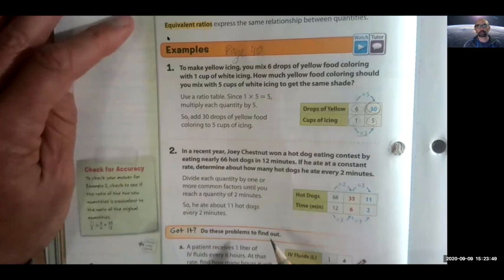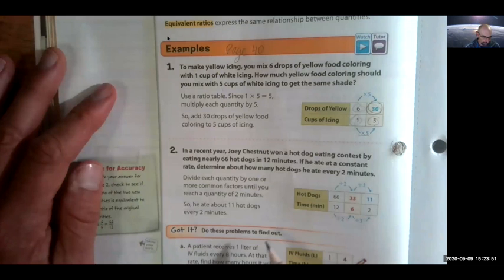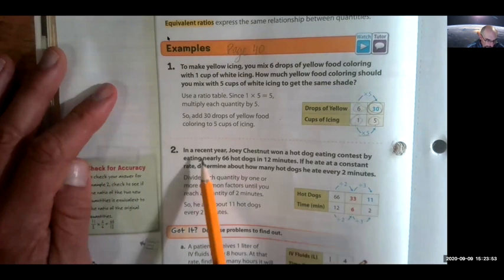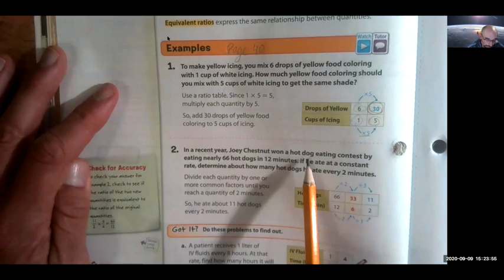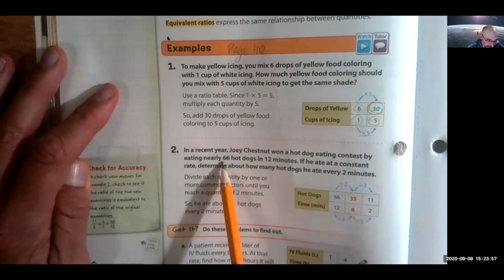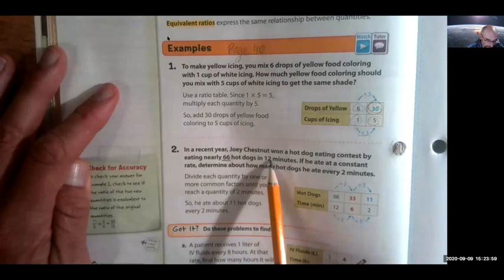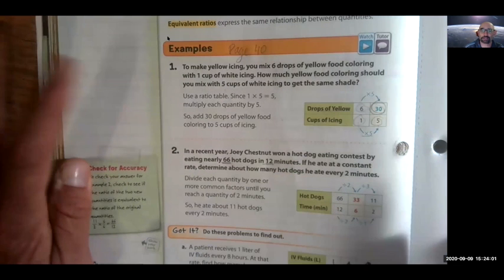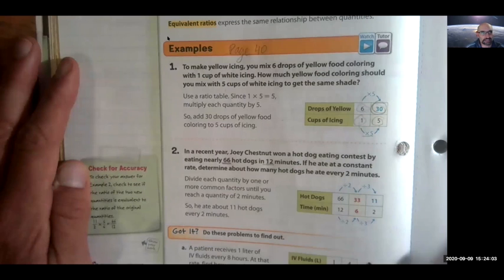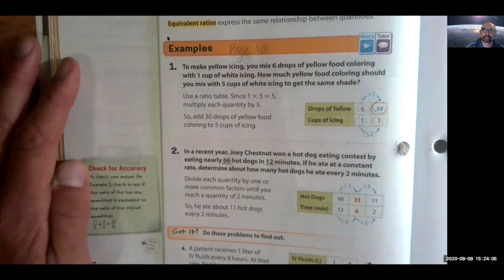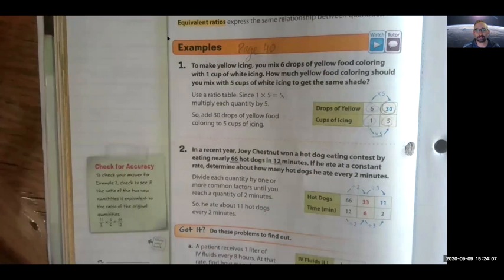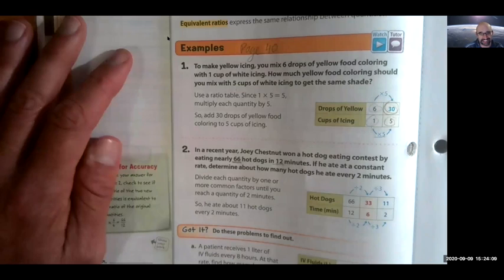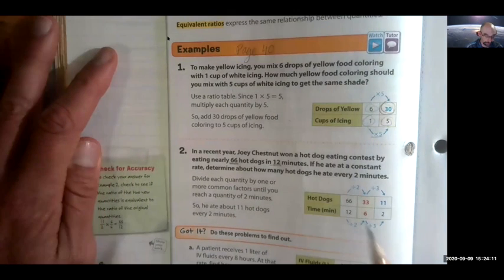And this one is sort of like one of the ones that we did as an example as well. In recent year, Joey Chestnut won a hot dog eating contest by eating nearly 66 hot dogs in 12 minutes. Okay. So let's just pause and think about that. 66 hot dogs in 12 minutes. I wouldn't be able to eat one hot dog in 12 minutes, but 66? That's crazy. But it's true. He's the world champion.